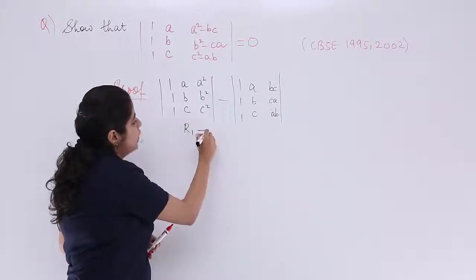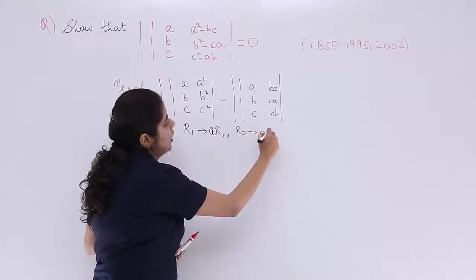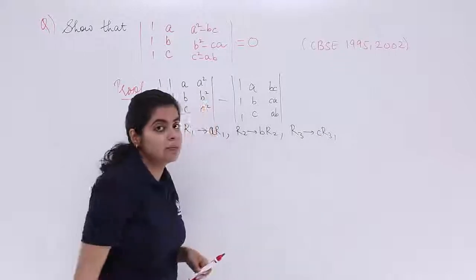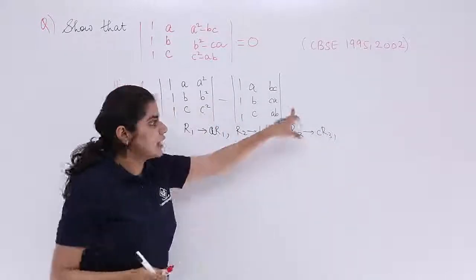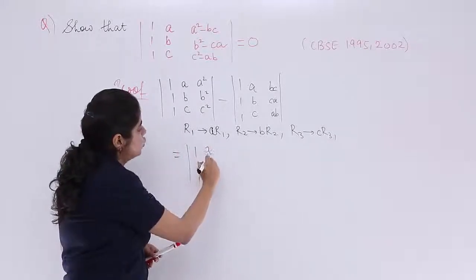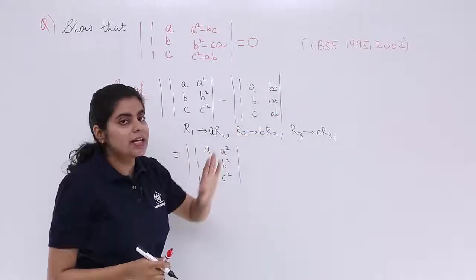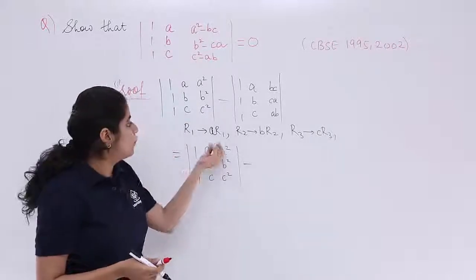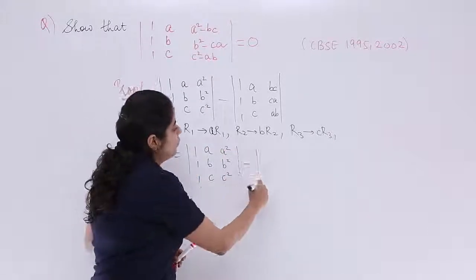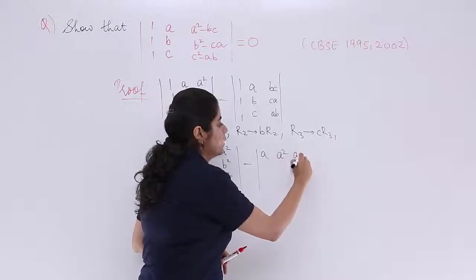Let's see. So, I am going to apply R1 such that R1 multiply A, R2 such that R2 has to be multiplied by B, R3 such that R3 will be multiplied by my C. And this I want to do it in the case of second determinant, not in the case of first. So, I keep on writing the first one as it is. No change with it. And now what I will do is with the second one.